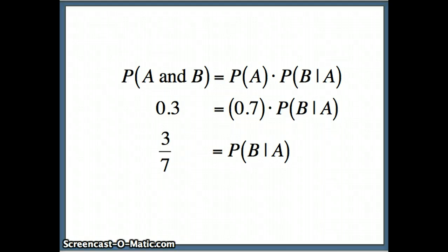Conditional probability is a useful concept. We can analyze conditional probabilities from Venn diagrams, from tables and sets of values, and we can also use the AND rule to determine what the conditional probability will be.